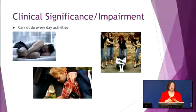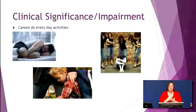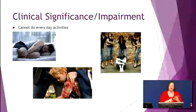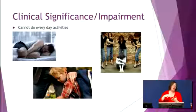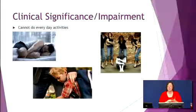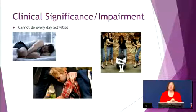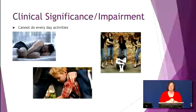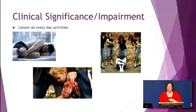The first criteria is clinical significance, which is impairment. This person cannot do everyday activities. You can see here a man cannot get out of bed. The woman on the right is yelling at herself — she's not moving, not taking care of her family or herself. Same thing with the young man below who's holding on to his parent's leg. He's not going into school, not meeting his daily responsibilities, not functioning. That is clinical significance and impairment.